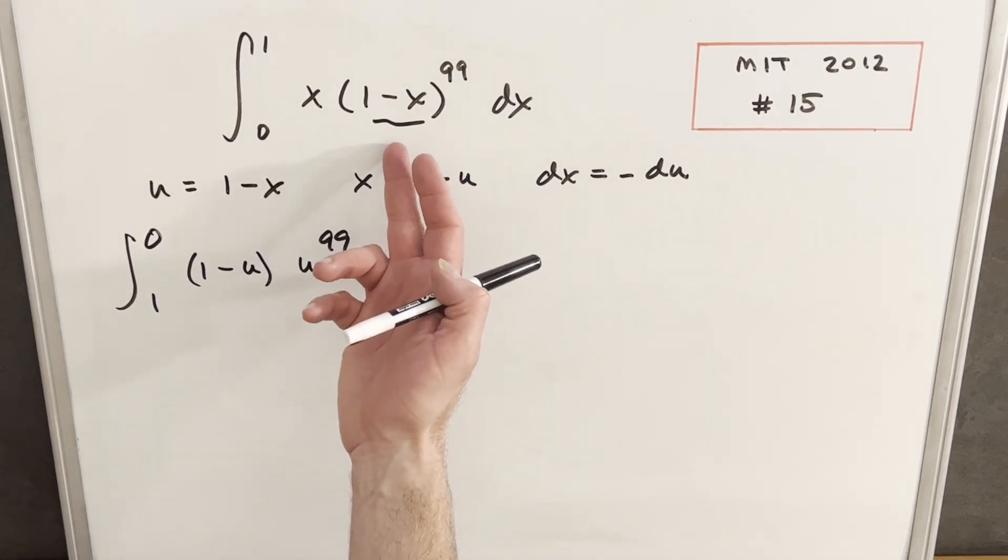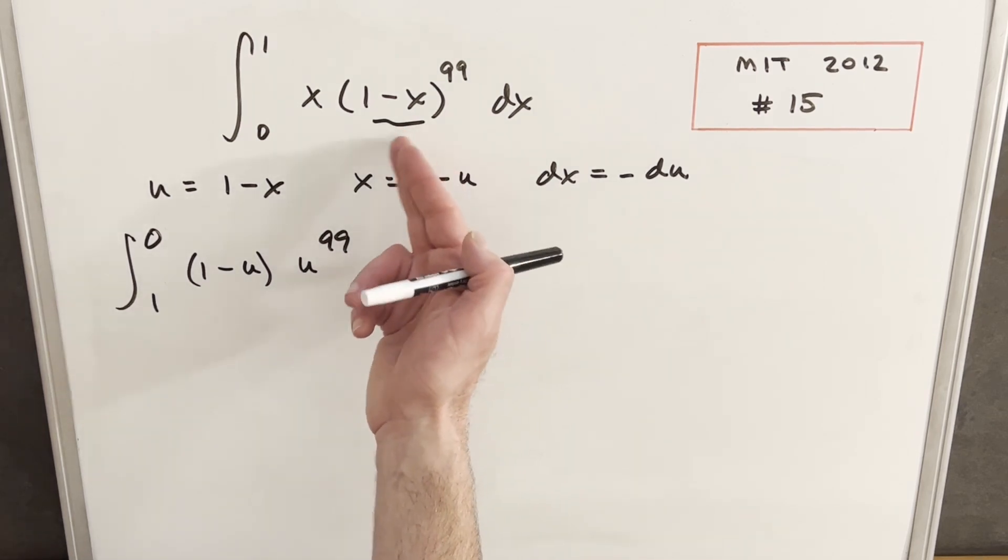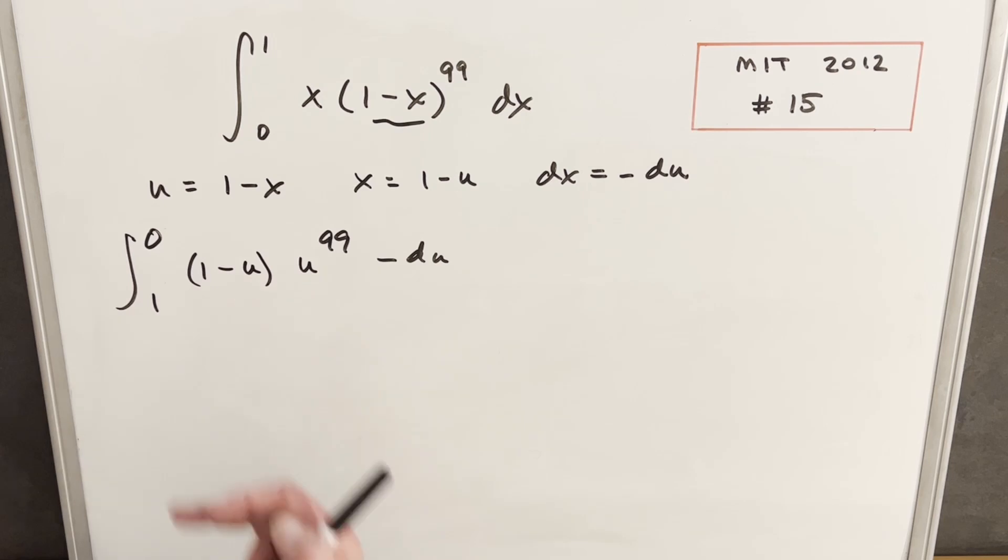And this is perfect. Like I mentioned, with the 1 minus x, we obviously didn't want to multiply that out, right, and get some gigantic term. So we needed a u substitution to simplify this, and we don't really care that this is a little more complicated.